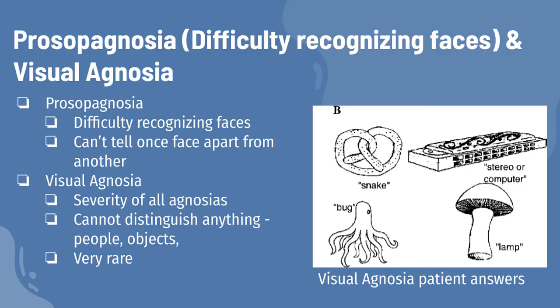Next, I'm going to be talking about the different diseases and disorders that occur in the temporal lobe. First, we have prosopagnosia. This means that someone who suffers an injury to their temporal lobe might have trouble recognizing faces. When someone has this condition, looking at your mother or your best friend can feel like looking at a stranger. This doesn't mean that the person has forgotten their friends and family — they can usually still recognize them by their voice; they just can't tell one person's face apart from another.